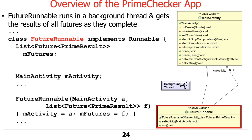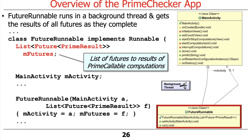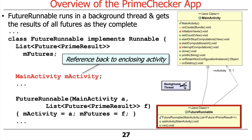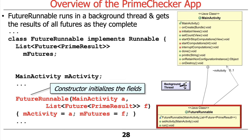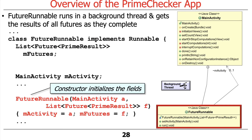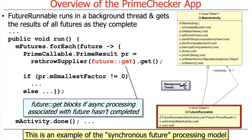There's another class called FutureRunnable. It runs in a background thread and gets the results of all futures as they complete. FutureRunnable implements the Runnable interface, so it has a run method. It has a field tracking all the futures created in the main UI thread, and a reference back to the enclosing activity to print results. The constructor initializes the list of futures and the main activity. The run hook method is called back by the thread running the runnable, and iterates over the list of futures.